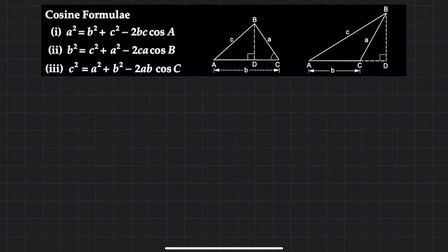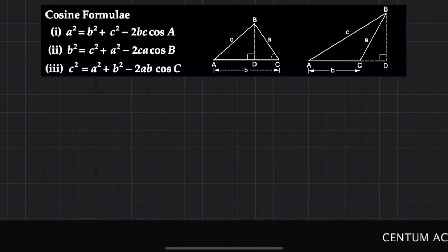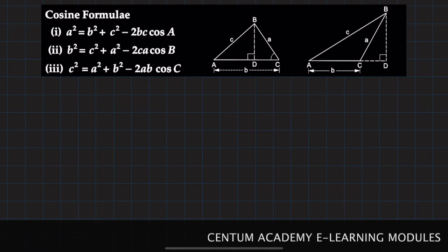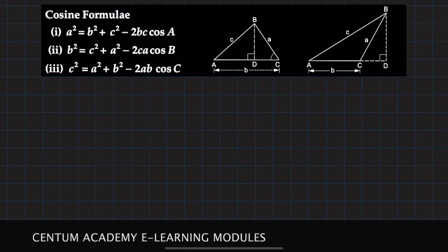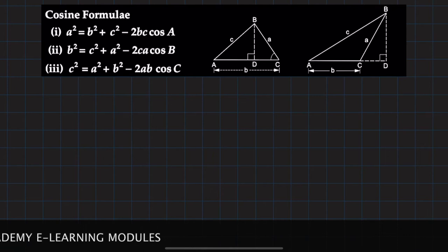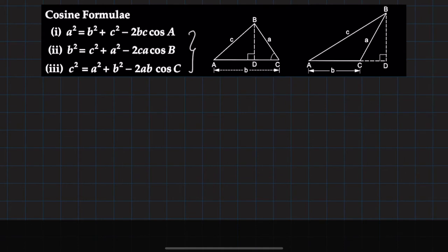Hello friends, welcome again to another session on trigonometry. In this session we are going to study one more formula called the cosine formula. In the last session you saw the sine rule, where a/sinA = b/sinB = c/sinC, which equals twice the circumradius of the triangle. Now we are going to study the formula: a² = b² + c² - 2bc·cosA, and likewise for other sides.